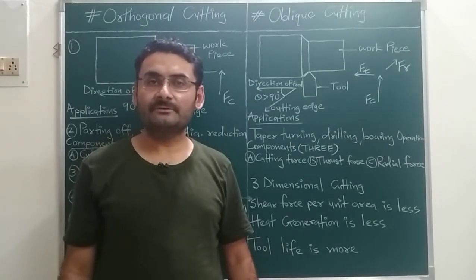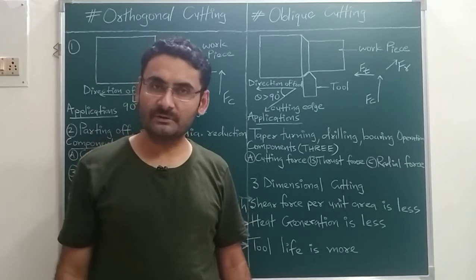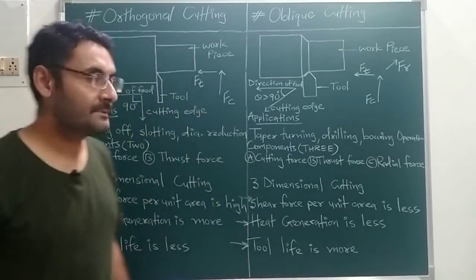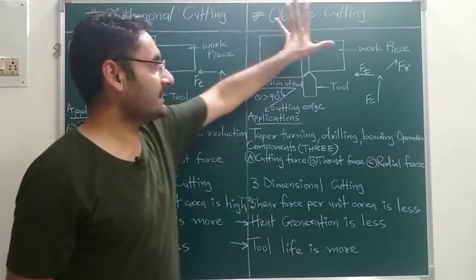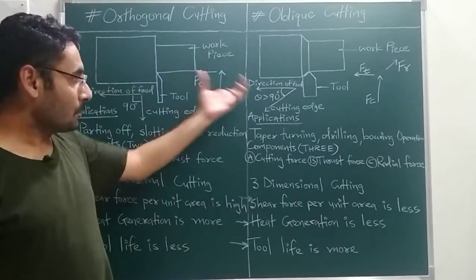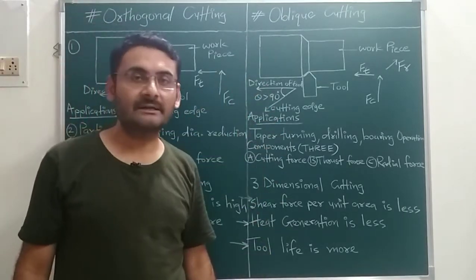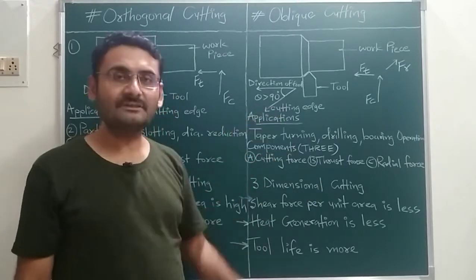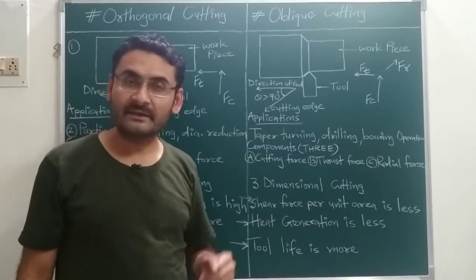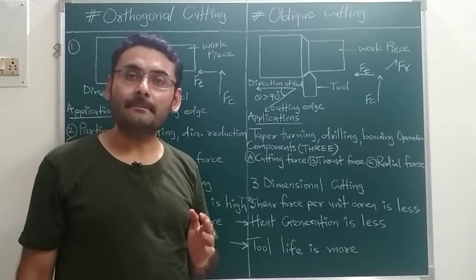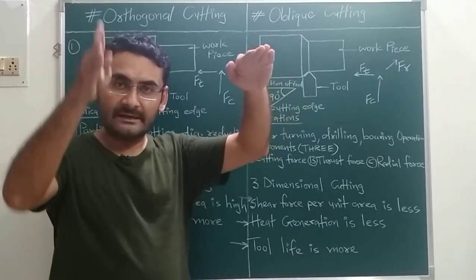Good morning, good afternoon, good night — whenever you watch this video. Today our topic is the difference between orthogonal cutting and oblique cutting. Both of these methods are used for metal cutting operations and both are based on one angle — the angle made by the direction of feed and the cutting edge of the tool.